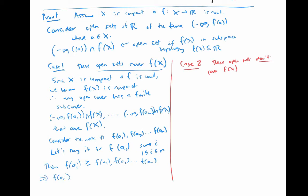Which means that f of a sub i is not an element of the interval from negative infinity to f of a sub k, for any k, where one is less than or equal to k is less than or equal to n.